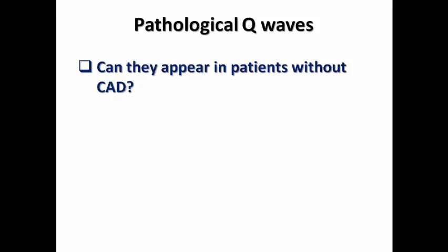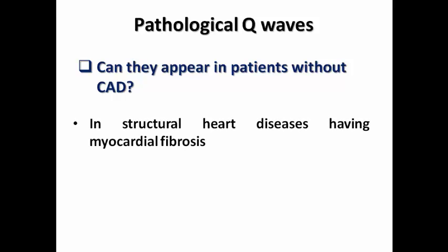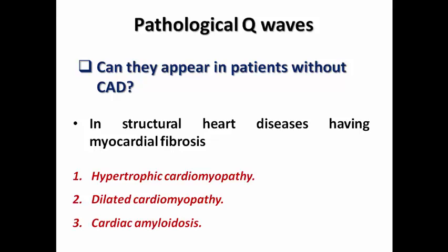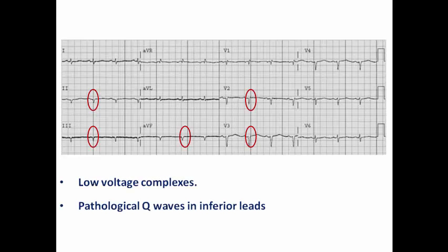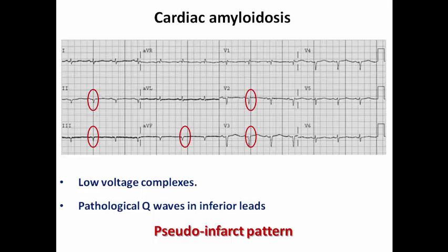Can pathological Q-waves appear in patients without ischemic heart disease? Yes — any structural heart disease characterized by myocardial necrosis resulting in fibrosis and scarring can produce pathological Q-waves, such as hypertrophic cardiomyopathy, dilated cardiomyopathy, and cardiac amyloidosis. In this ECG example, the patient has pathological Q-waves in V2–V3 with low voltage complexes — this is called a pseudo-infarct pattern because the patient has no coronary artery disease. This patient had cardiac amyloidosis, an infiltrative disease of the myocardium resulting in low QRS voltage and pathological Q-waves.